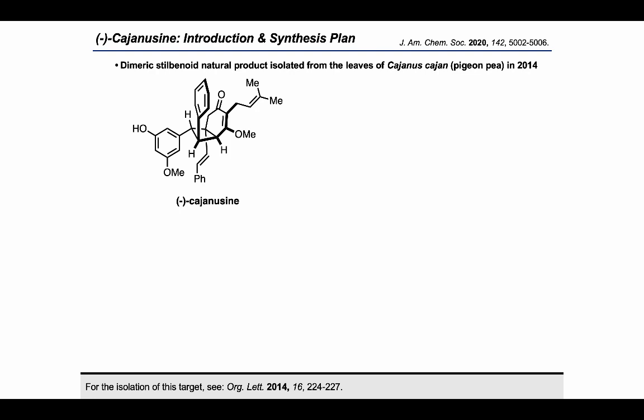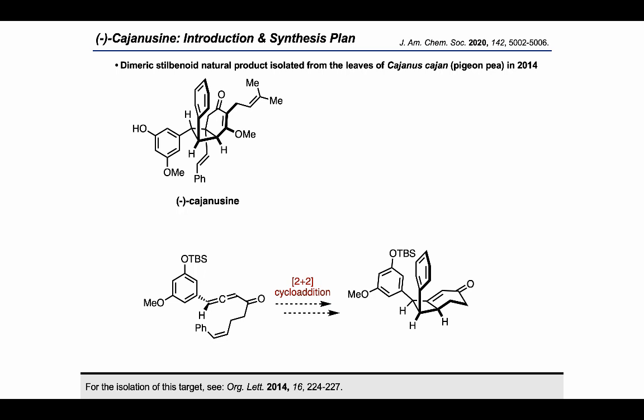In their approach to this target, the Brown Group imagines starting from an enantioenriched allene, which could be used in a 2+2 cycloaddition to give the desired cyclobutane motif.